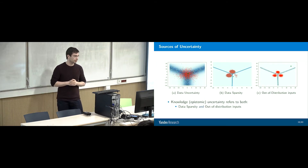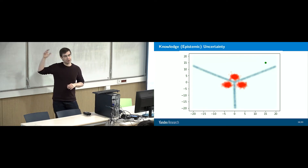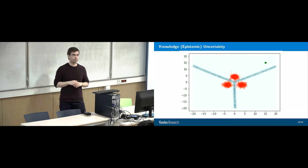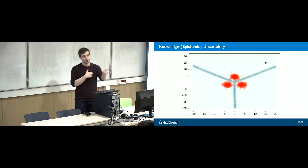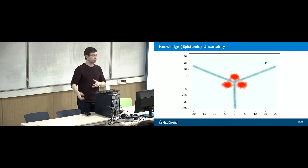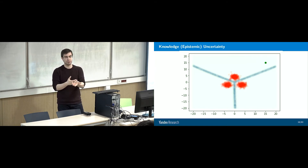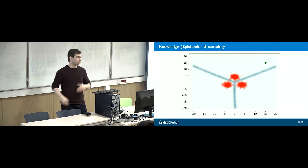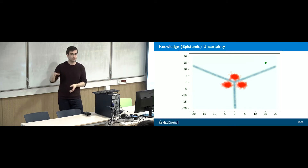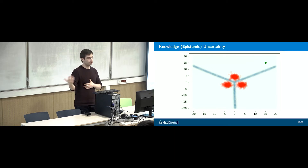Now we go to knowledge uncertainty. Knowledge uncertainty occurs when we have inputs which lie far away from the region of training data — data we haven't seen before. Because we haven't seen any data in this region, we don't know anything about it. It could be class two, or maybe the space wraps around in some interesting way and it's class one or three, or maybe some new unseen class four. Our models should be uncertain in predictions far away from training data.